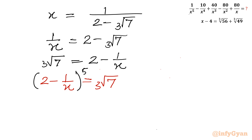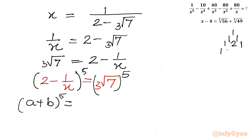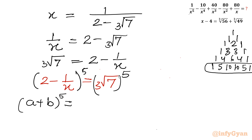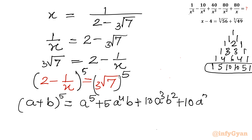Writing a plus b whole power 5 using Pascal's triangle: the coefficients for power 5 are 1, 5, 10, 10, 5, 1. So a plus b whole power 5 equals a power 5 plus 5 a power 4 b plus 10 a cube b square plus 10 a square b cube plus 5 a b power 4 plus b power 5. For a minus b whole power 5, the signs alternate.